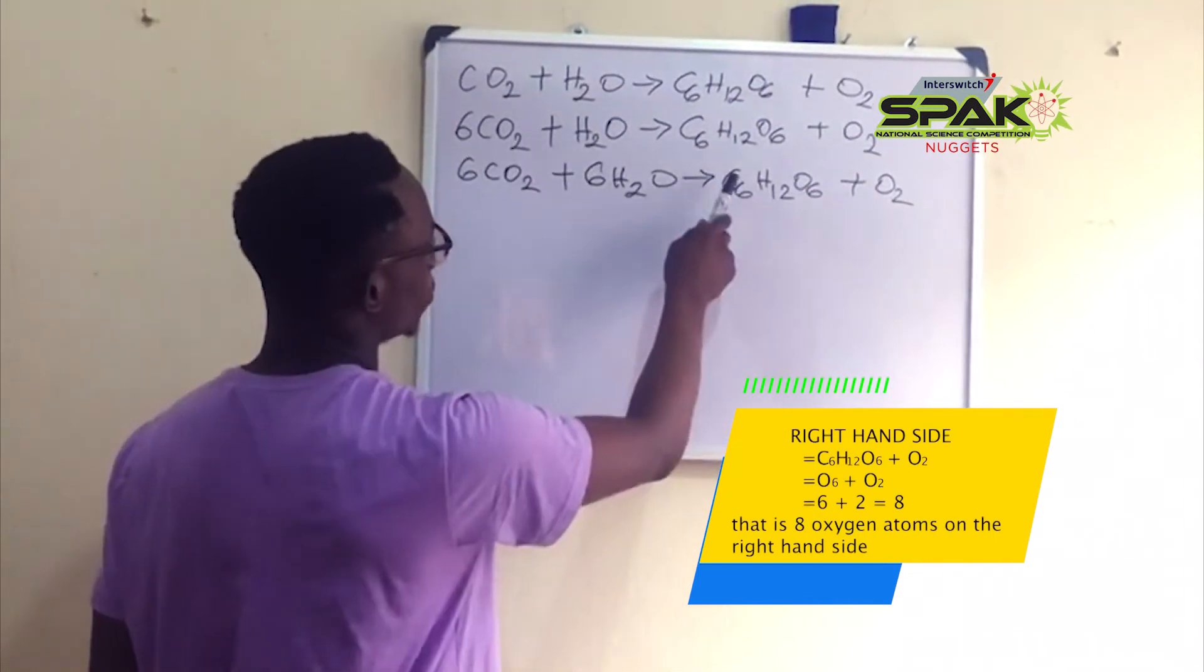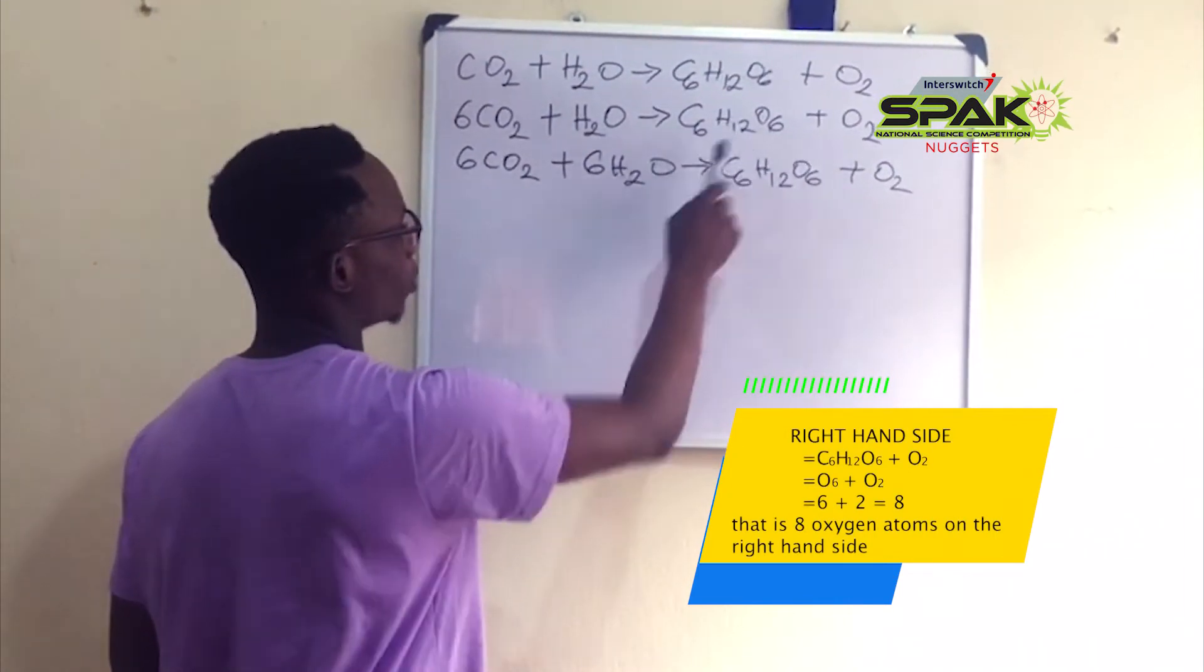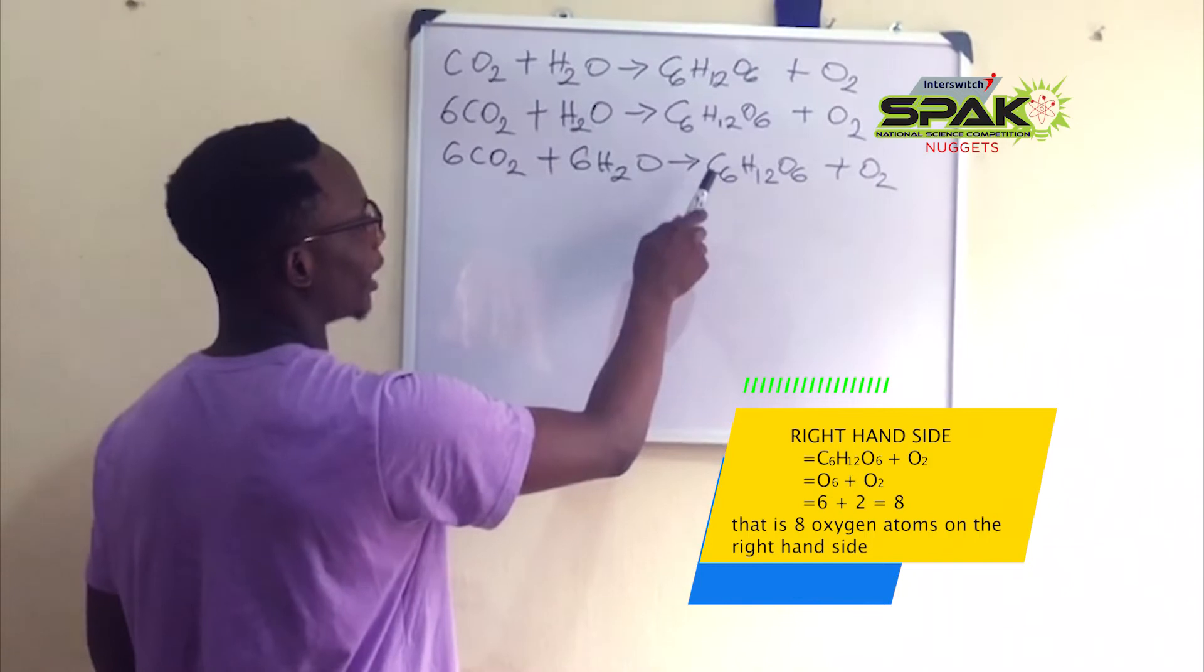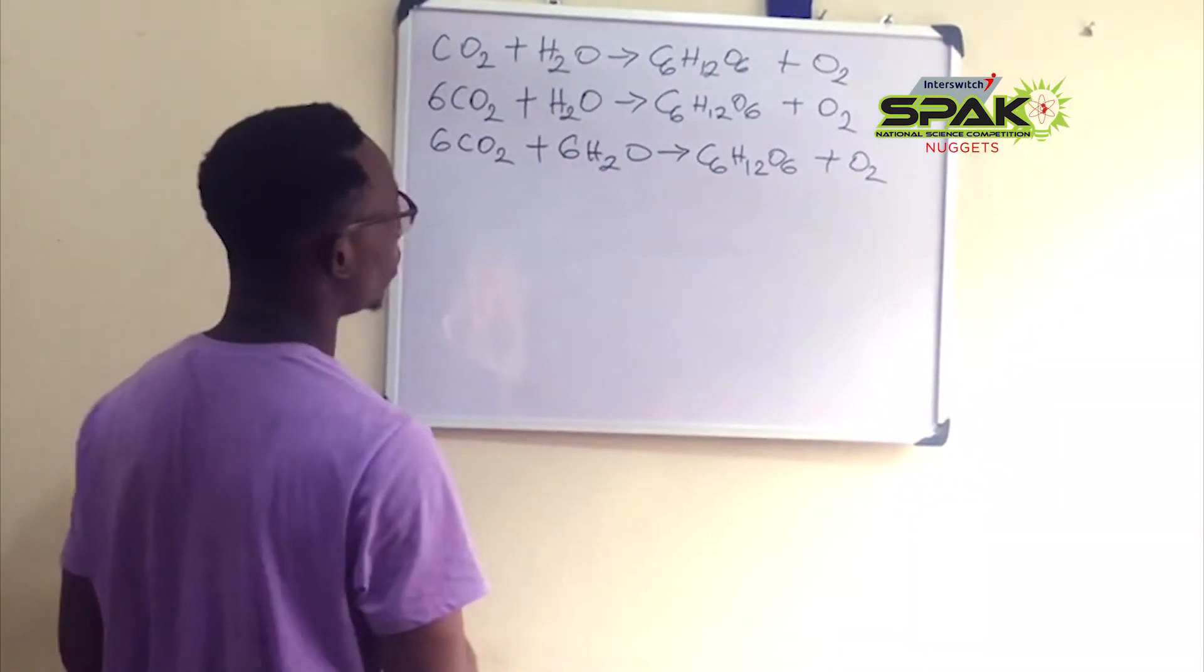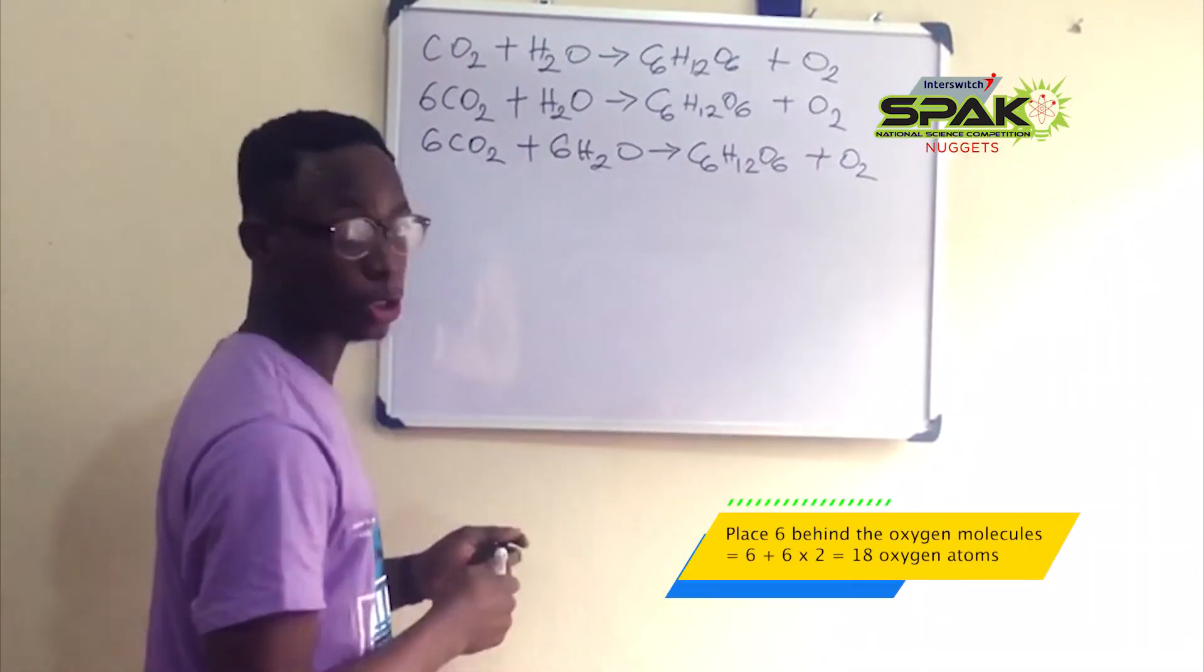On the right hand side we have 6 carbon atoms, but do not do anything to this glucose molecule since our carbon and hydrogen atoms are already balanced. So, we place 6 behind this oxygen molecule.